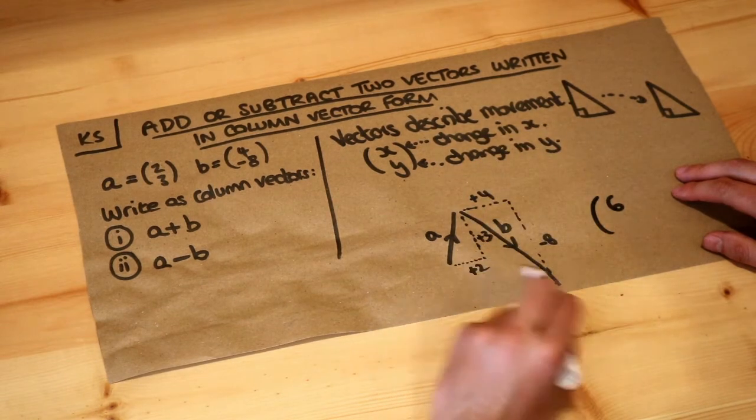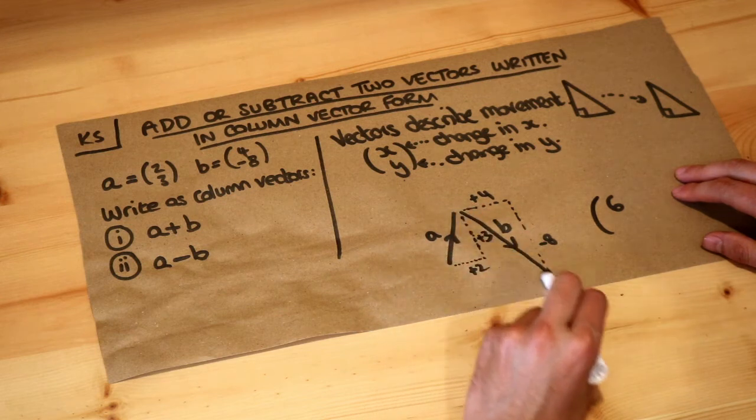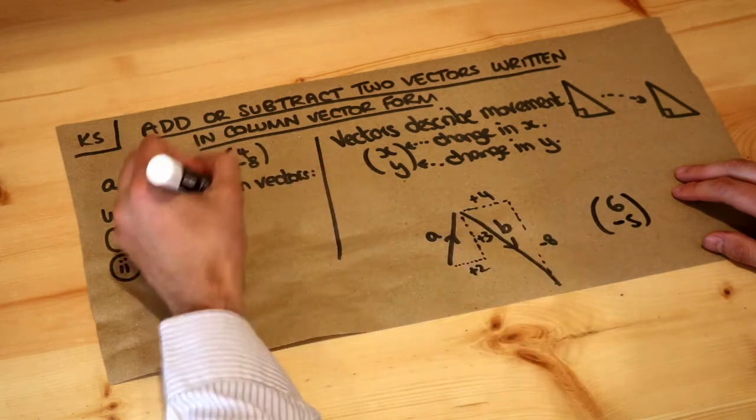And then let's think about the y value. Going from here to here the y value has gone up by 3 but then the y value decreased by 8. Overall it's gone down by -5.